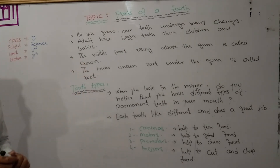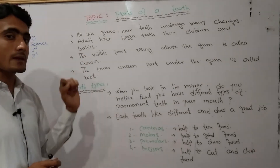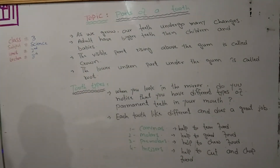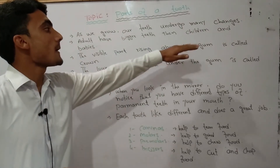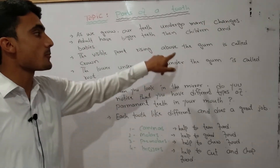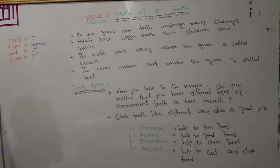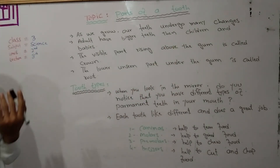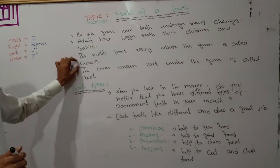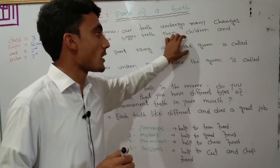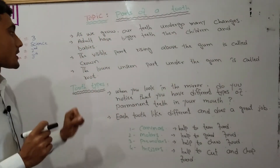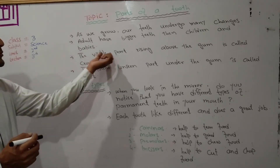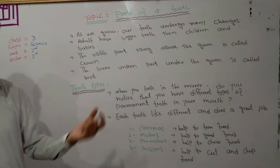The visible part rising above the gum is called the crown. Gum means the soft tissue of the mouth. The part of the tooth you can see when you look in your mouth, rising above the gum, is called the crown.